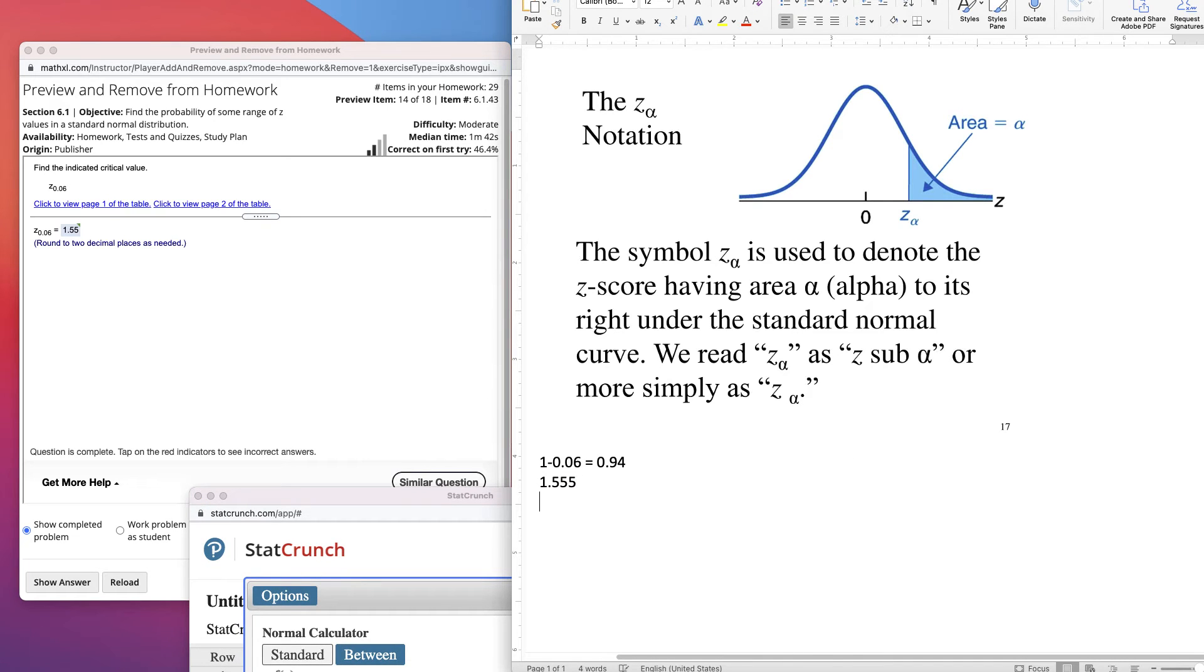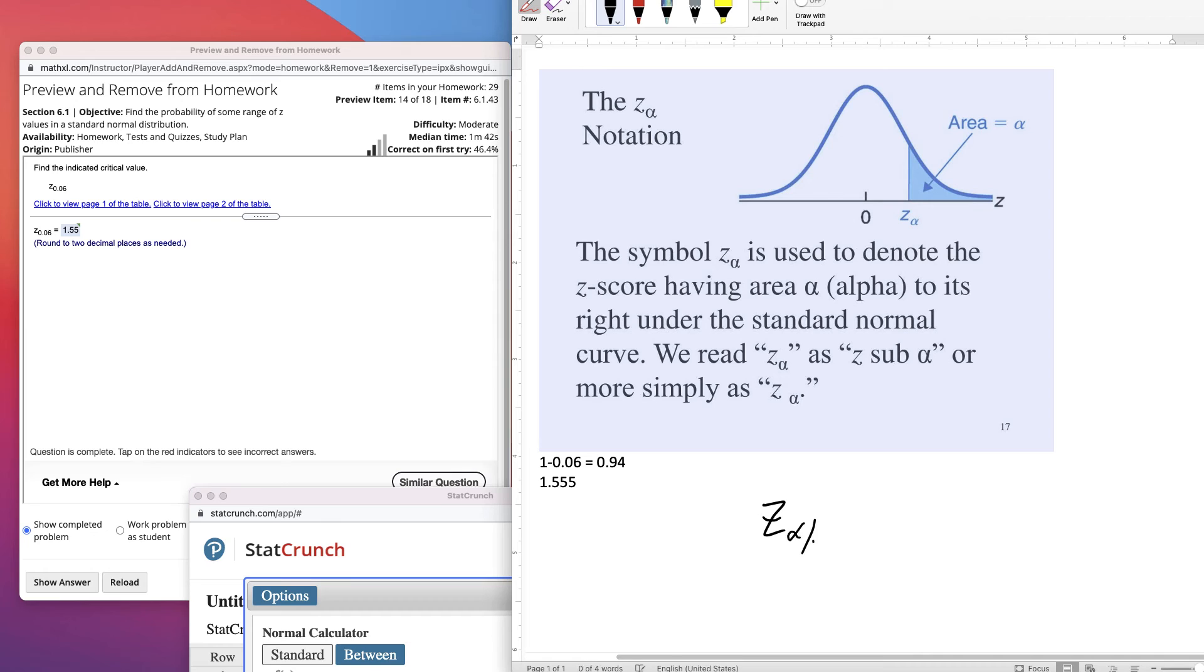I just want to talk a little bit about if you have z sub alpha divided by 2. So this is later. If you're here in this video and you see z sub alpha divided by 2. And they say alpha is, say, 0.20. Now this means the area to the right of alpha divided by 2. Okay, so it would actually be z sub 0.20 divided by 2. Which would be z sub 0.10.